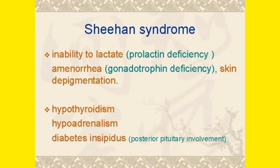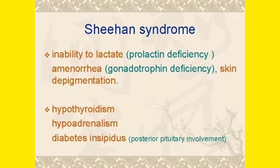Another feature is amenorrhea. These patients will always complain of amenorrhea, which means absence of menstrual bleeding — the patient is not having their periods or proper bleeding. This occurs because of gonadotropin deficiency. So the patient cannot lactate due to prolactin deficiency, and cannot menstruate due to gonadotropin deficiency.